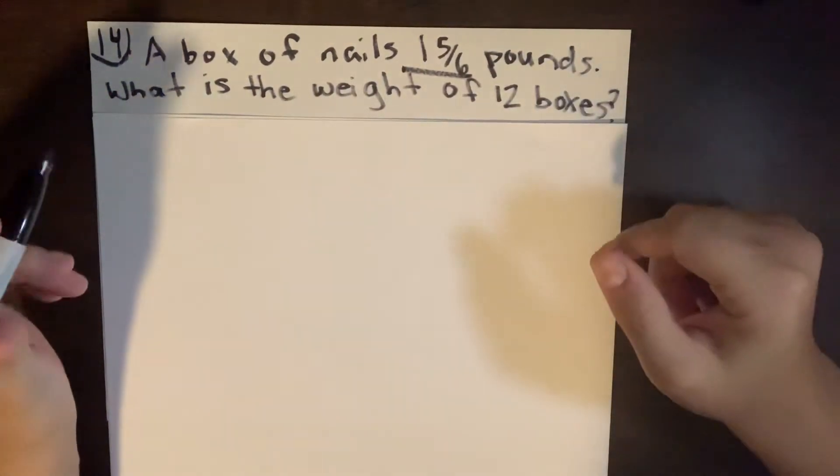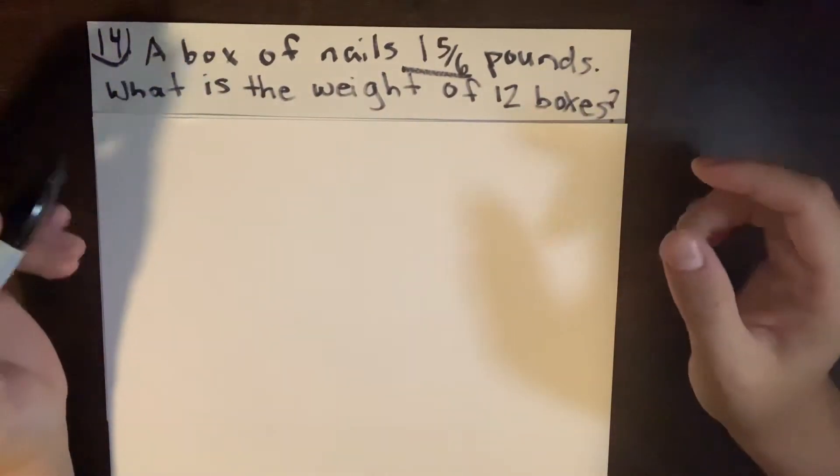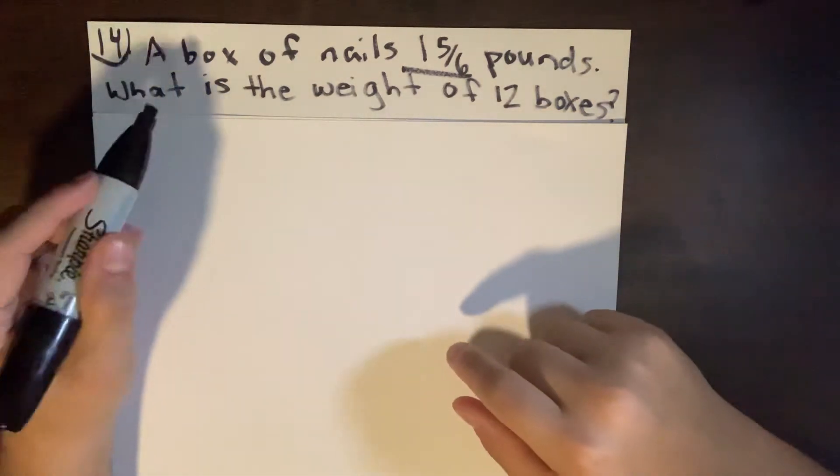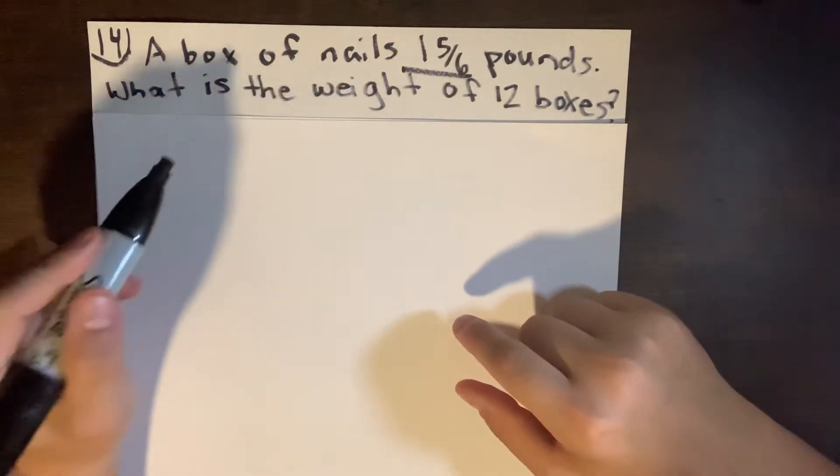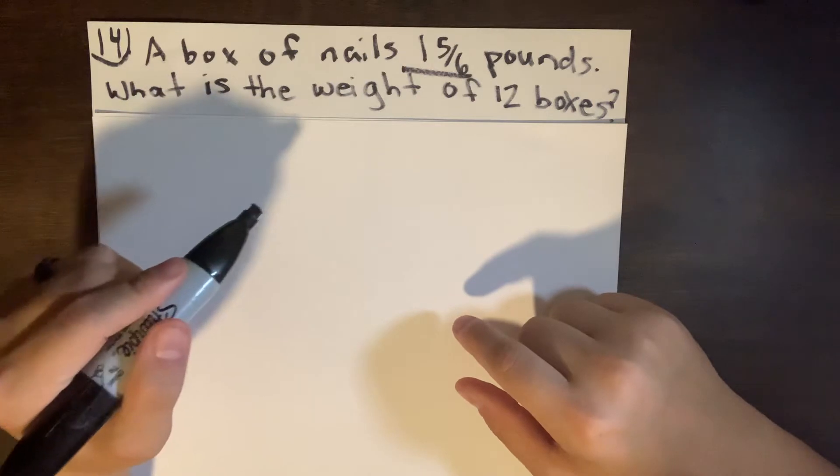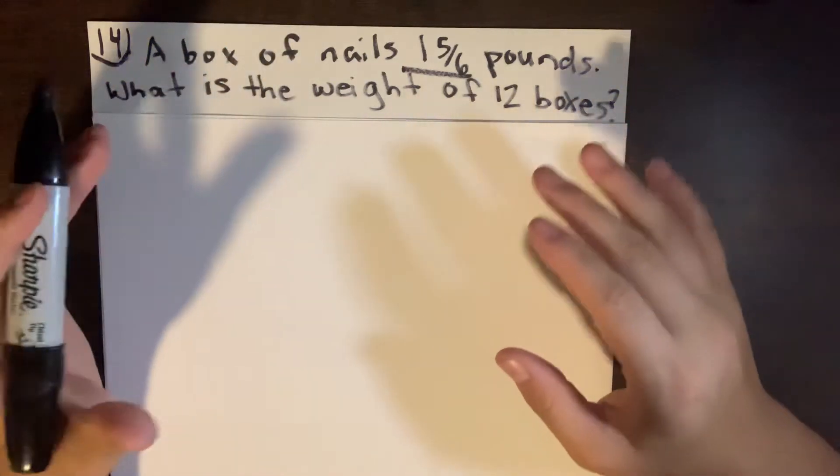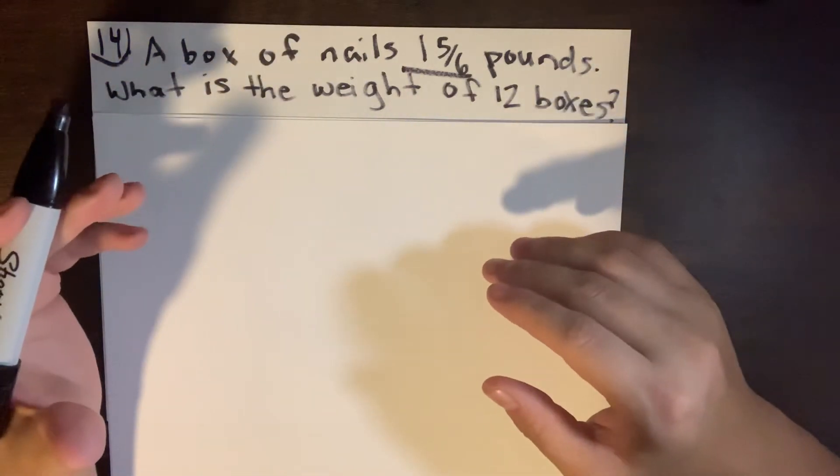Okay, so I just wanted to really quickly show you a quick method of how I can do this. So a box of nails is one and five sixths pounds. What is the weight of the twelve boxes? This method I'm going to be kind of using entirely common sense.